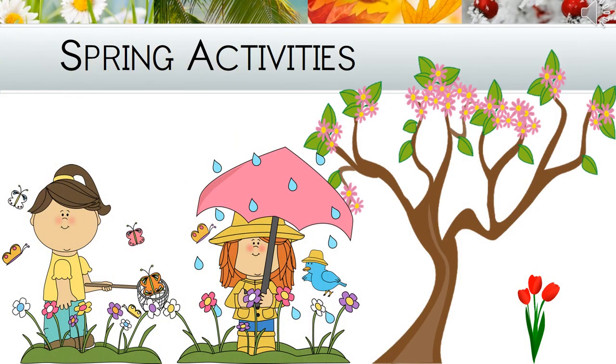Spring is the season after winter and before summer. In the southern hemisphere, we experience spring in September, October, and November. In many parts of the world, plants grow and flowers bloom. Spring is a time when flowers bloom and trees begin to grow and reproduce. The days grow longer and the temperature in most areas becomes more temperate. You can also see the melting of ice and thawing of the ground.